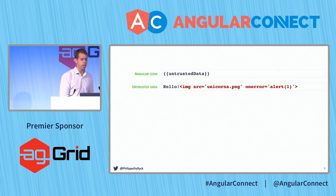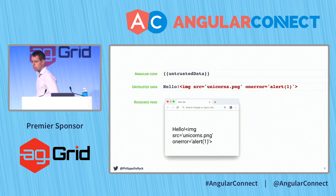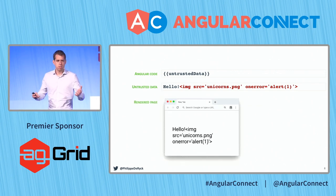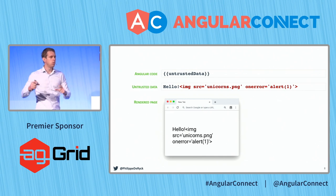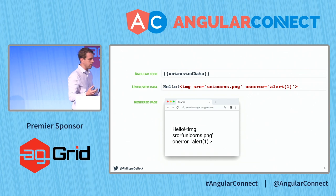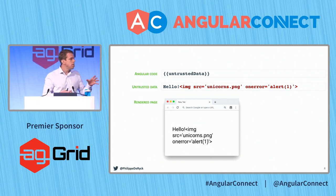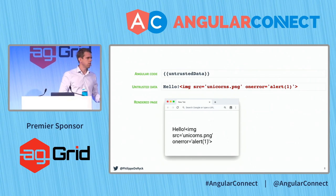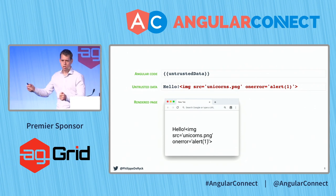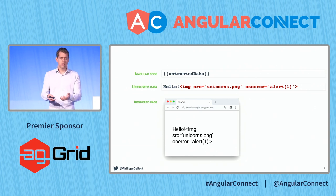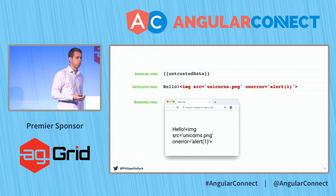Cross-site scripting is really, really dangerous. How does Angular handle this? If you output data in Angular using curly brackets, Angular knows it's putting data into the page, so it makes sure that data will be seen as data by the browser. The browser doesn't see this as code, it won't try to execute it. So that output is safe — it will never trigger the execution of script code.